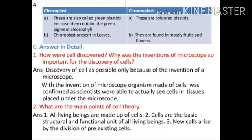Next: differentiate between chloroplast and chromoplast. Chloroplasts are also called green plastids because they contain the green pigment chlorophyll. Chromoplasts are colored plastids. Chloroplasts are found in the green parts of plants, while chromoplasts are found mostly in fruits and flowers.